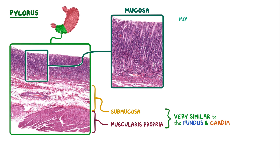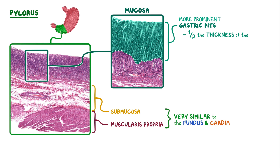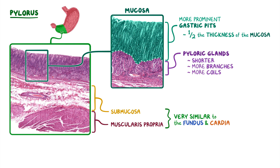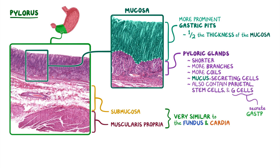The mucosa of the pylorus has more prominent gastric pits that comprise about half the thickness of the mucosa, instead of only a quarter or less. As a result, the pyloric glands are generally shorter, have more branches, and more coils compared to the glands of the fundus or cardia. The majority of pyloric glands are mucus-secreting cells similar to the mucus neck cells. The glands also contain smaller numbers of parietal cells, stem cells, and G cells, which secrete gastrin.